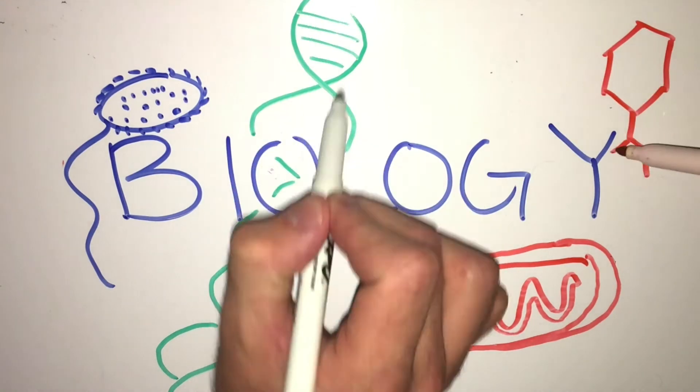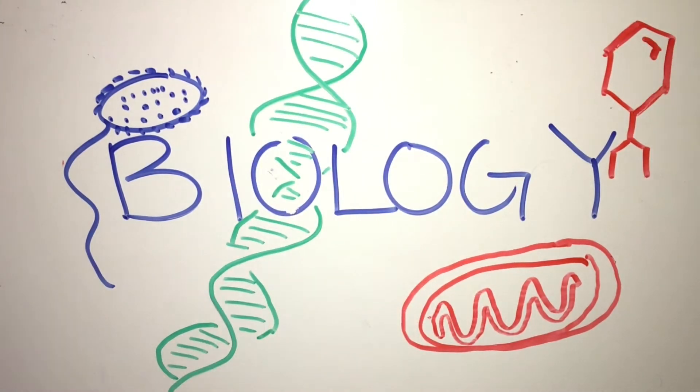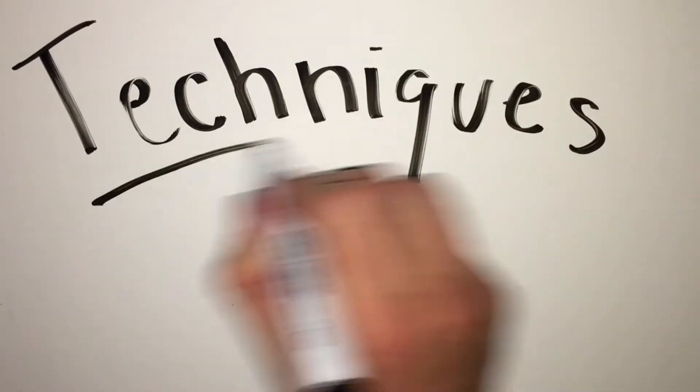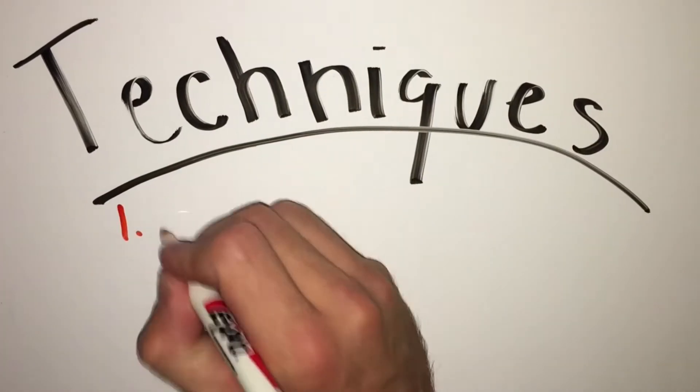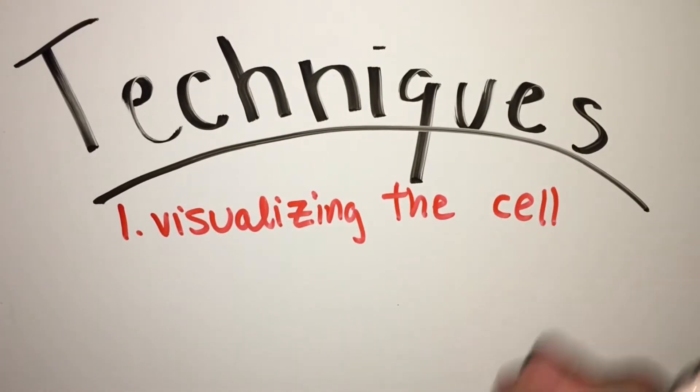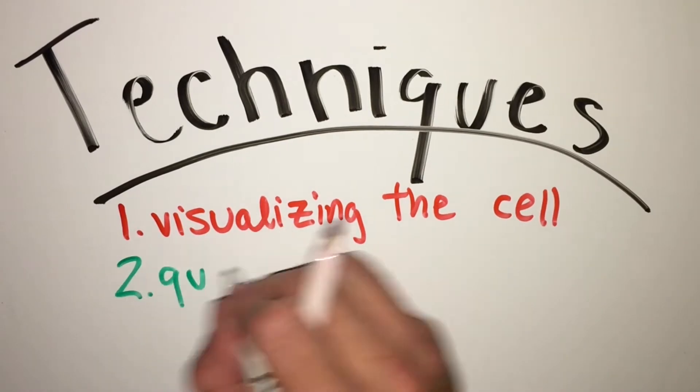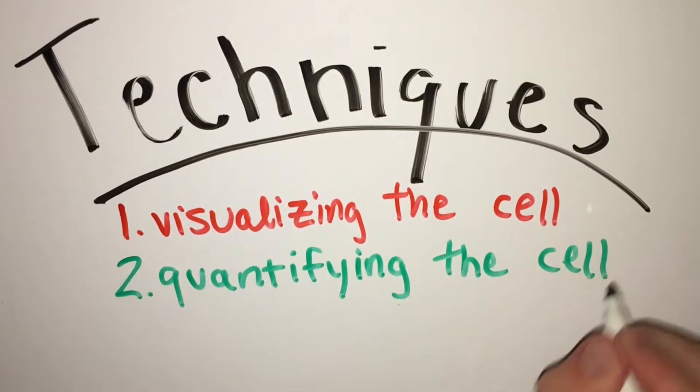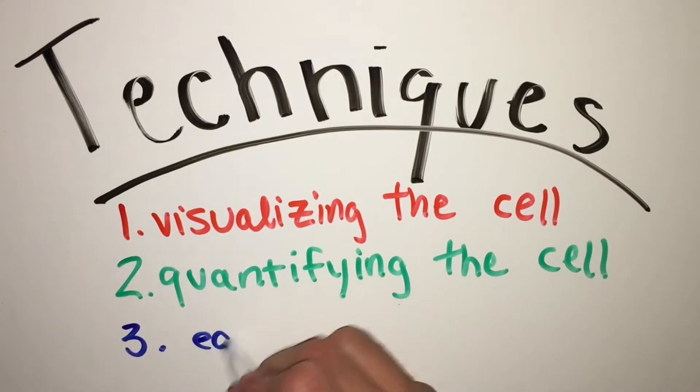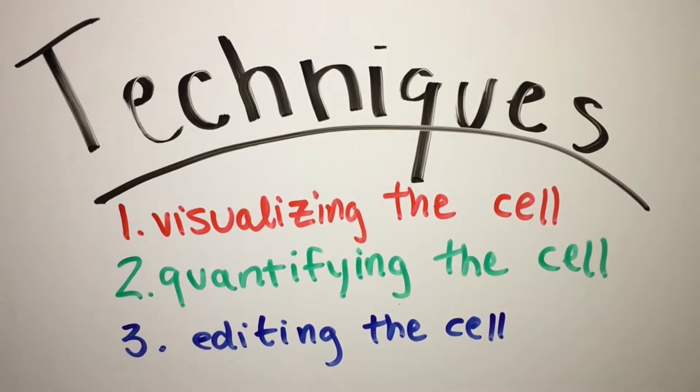Here, we will present some molecular biology research techniques that are commonly used to study the cell and its many components. In this video, we will look at six different techniques coming from three domains. First, we will look at ways to visualize the cell and its individual components. Next, we will look at ways to quantify the cell. And finally, we will look at ways to edit the cell.